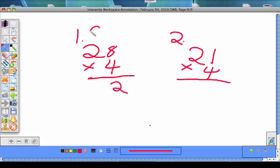So keep the 2 and add the 3 on top of the tens place. Then you multiply the number at the bottom times the number in the tens place.